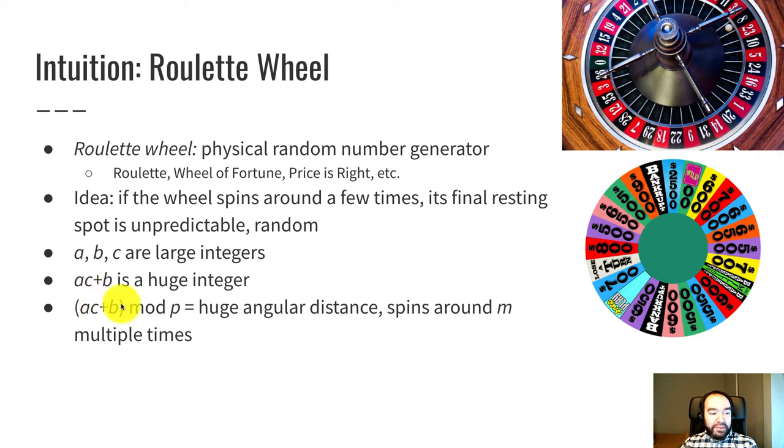So AC plus B mod P, that's still a huge number. That kind of corresponds to how hard you push on this and make it spin around. If I did AC plus B mod P, so that big integer, if I divide that by M, that's how many complete revolutions we make around the roulette wheel.